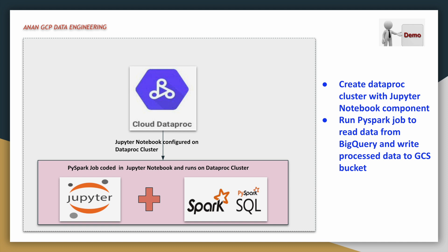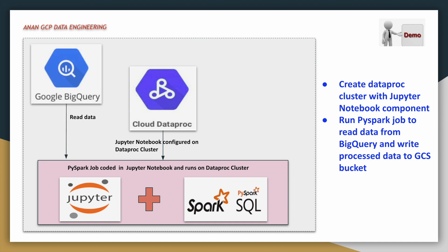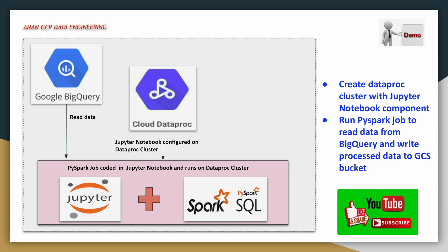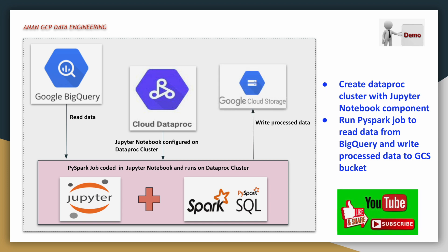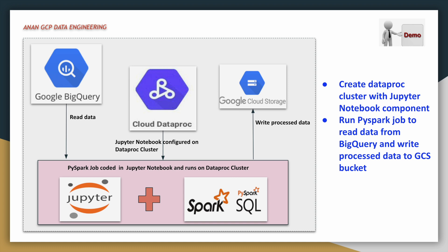Once we have the notebook available, we will run a PySpark job which will read data from a Google BigQuery public dataset table, perform a series of transformations and data aggregations, then write the resultant data into Google Cloud Storage. Now let us quickly go to the demo.